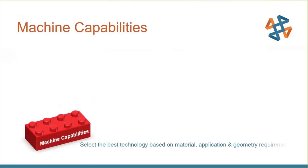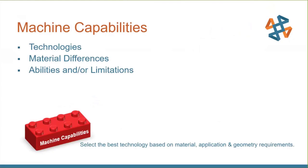Looking at machine capabilities, you want to select the best technology for material applications. We're going to look at some different technologies. This doesn't apply just to FDM and PolyJet — it will also apply to stereolithography, laser sintering, and a lot of other technologies. We're going to look at material differences and the abilities and limitations of machines and some things you can do to control them.